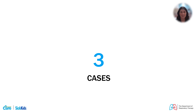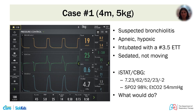The first case is a four-month-old, five-kilogram infant suspected to have bronchiolitis. On arrival to the emergency department, they are apneic and hypoxic. Despite optimizing therapies, the patient progresses to requiring intubation and is now intubated with a 3.5 ETT, sedated and not moving. The blood gas shows a pH of 7.23, CO2 of 62, bicarbonate of 23, and base excess of minus two. End-tidal is reading 54 mmHg and saturation is 98%.